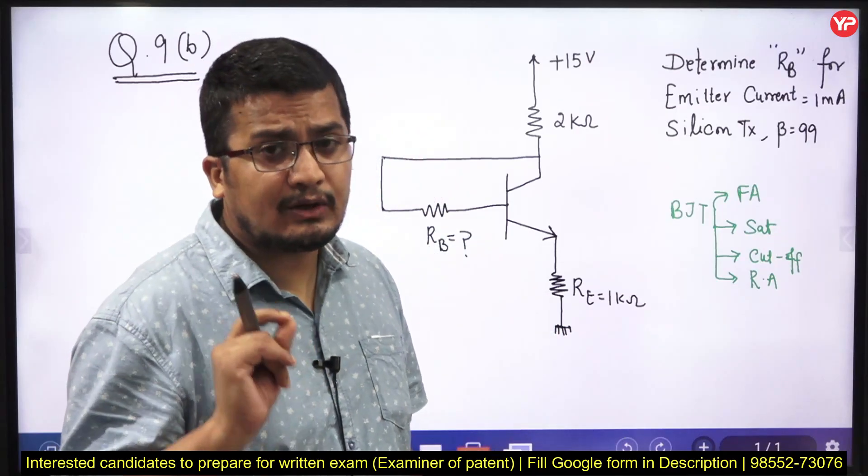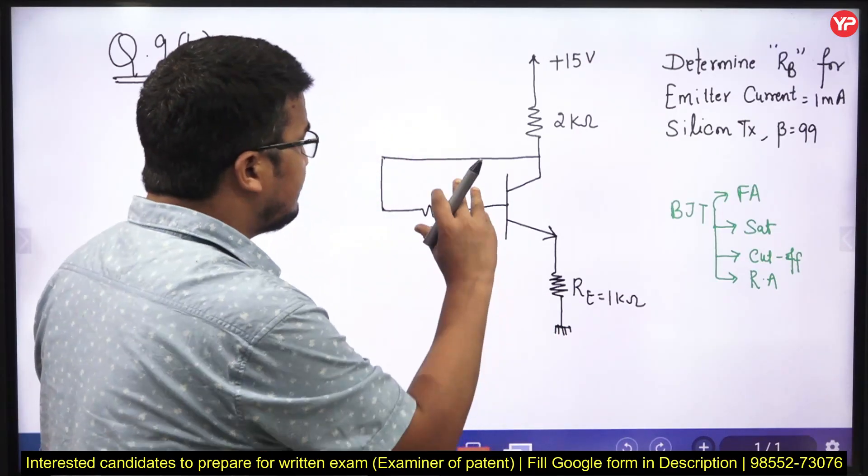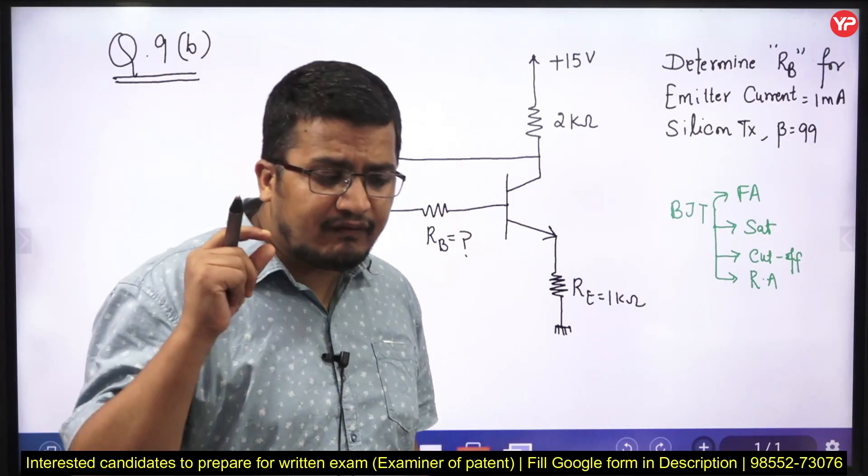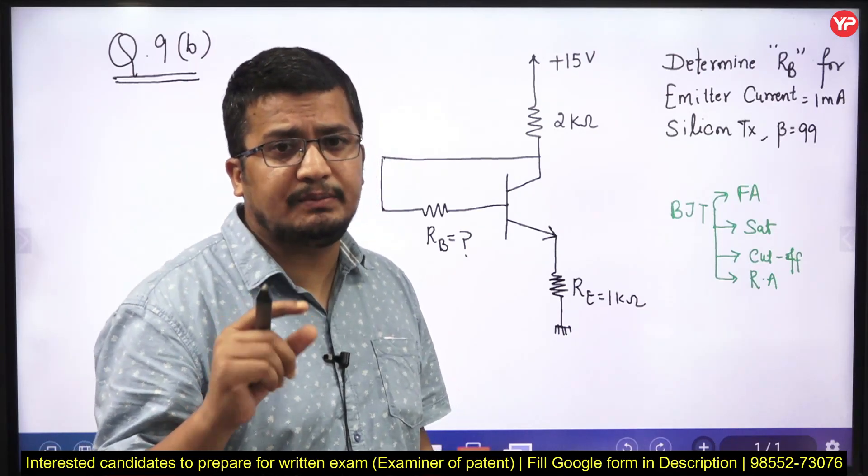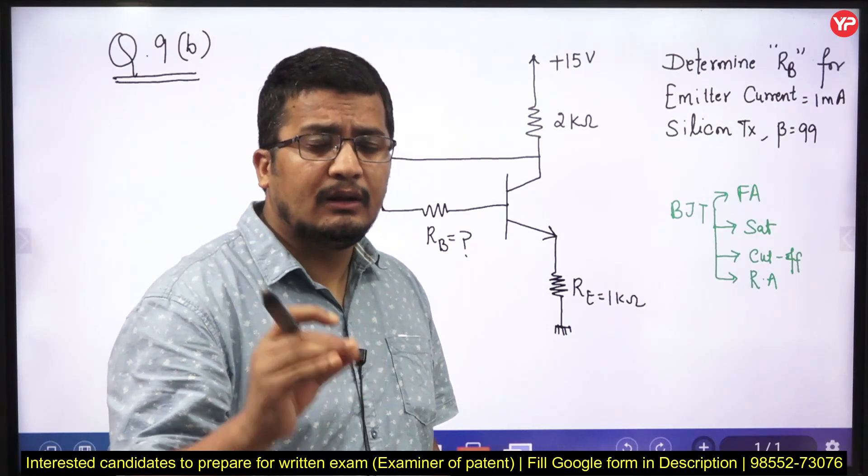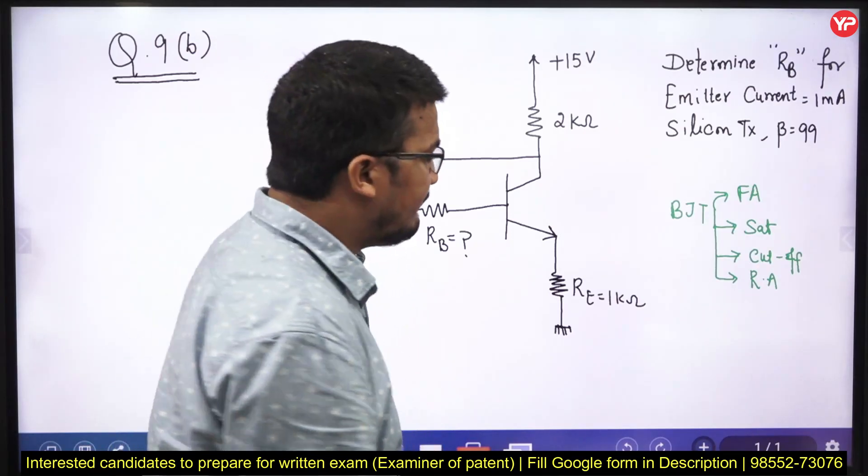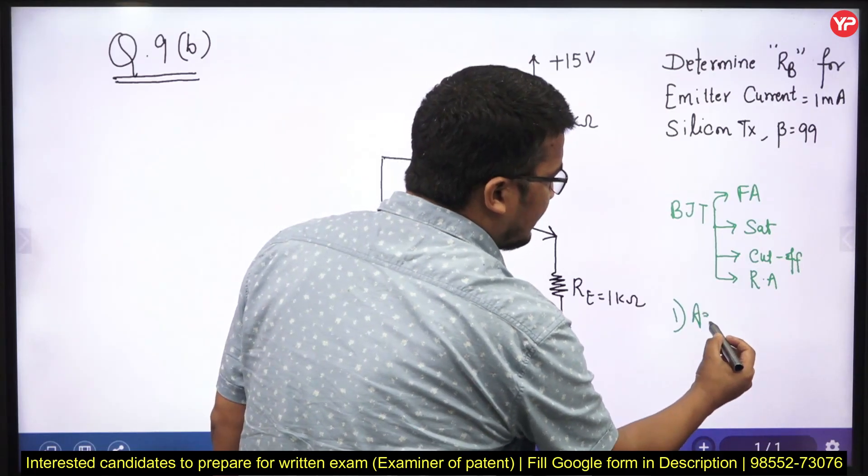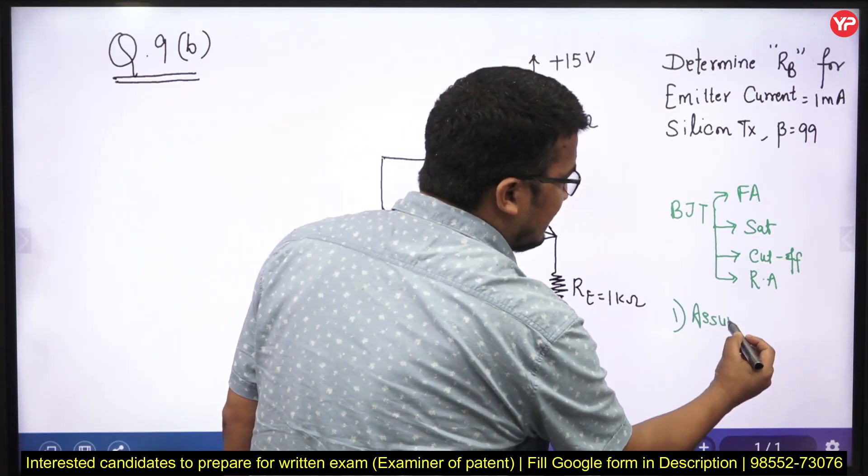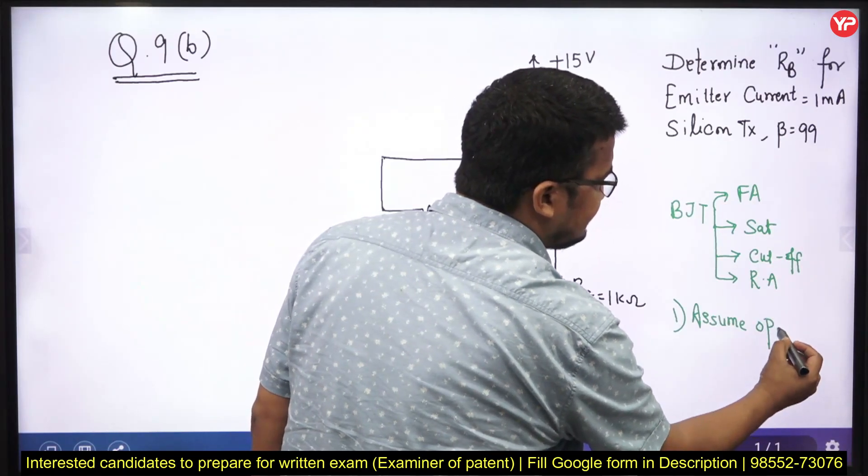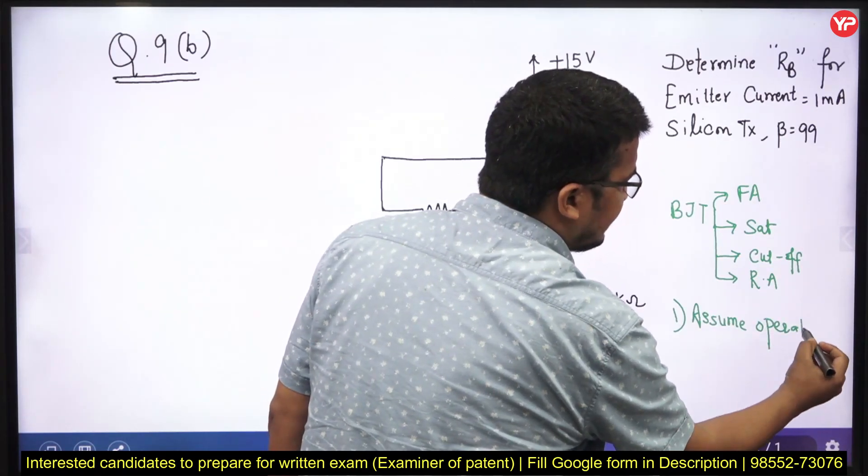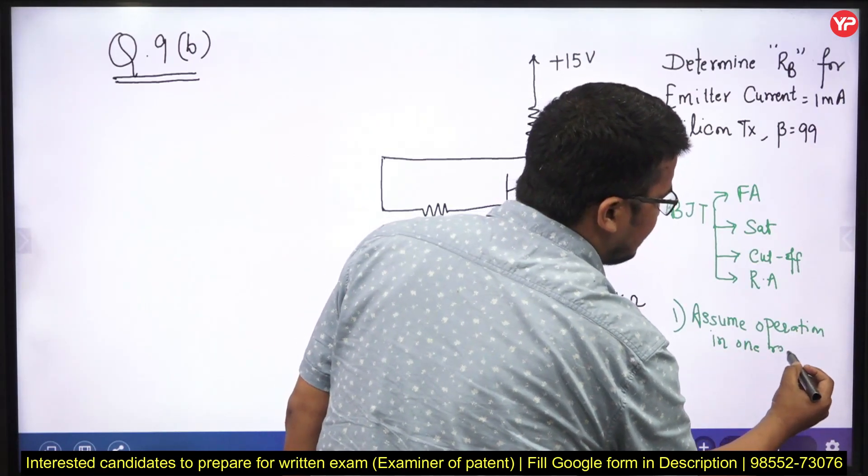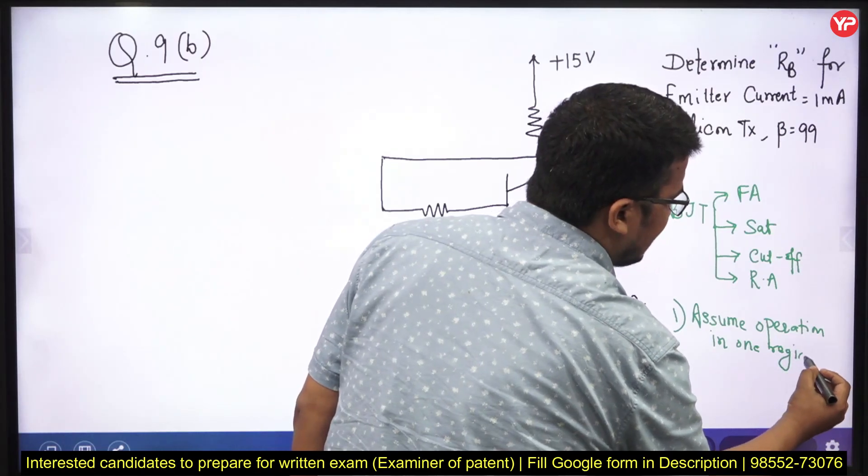Most of the time, if you are not in position to visualize this circuit is working in which mode, there is a fundamental golden rule of analog electronics, be it BJT, be it diode, be it operational amplifier, be it FET. The very first rule is, you need to assume one region. Assume operation in one region. Assume operation of device in one region.